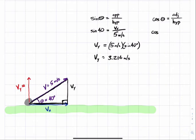The cosine of 40 degrees equals Vx divided by 5 meters per second. Rearranging this equation, I see Vx equals 5 meters per second times cosine 40 degrees. So Vx equals about 3.830 meters per second.